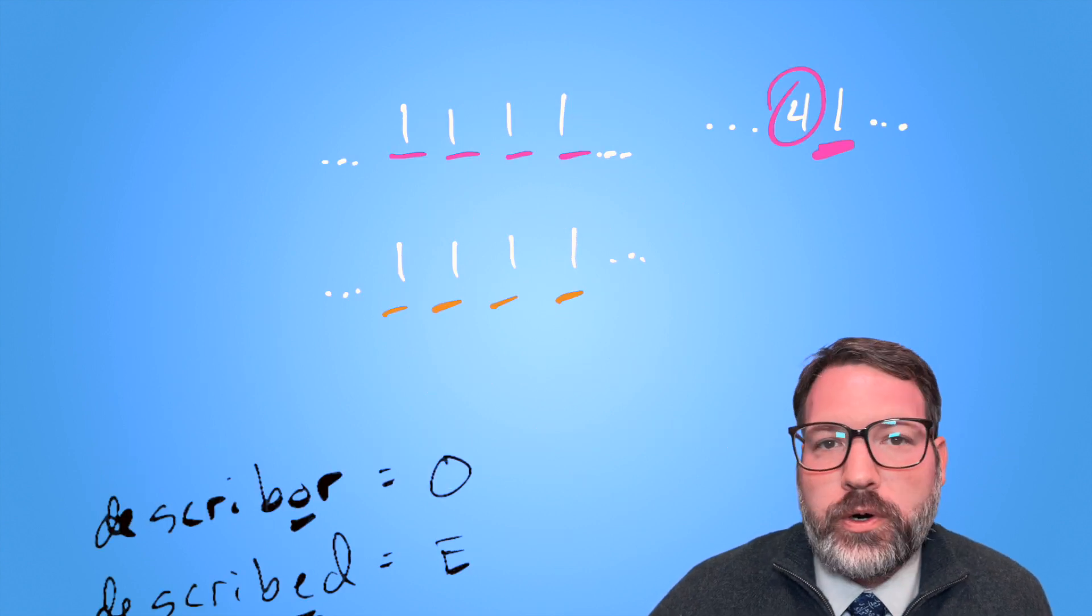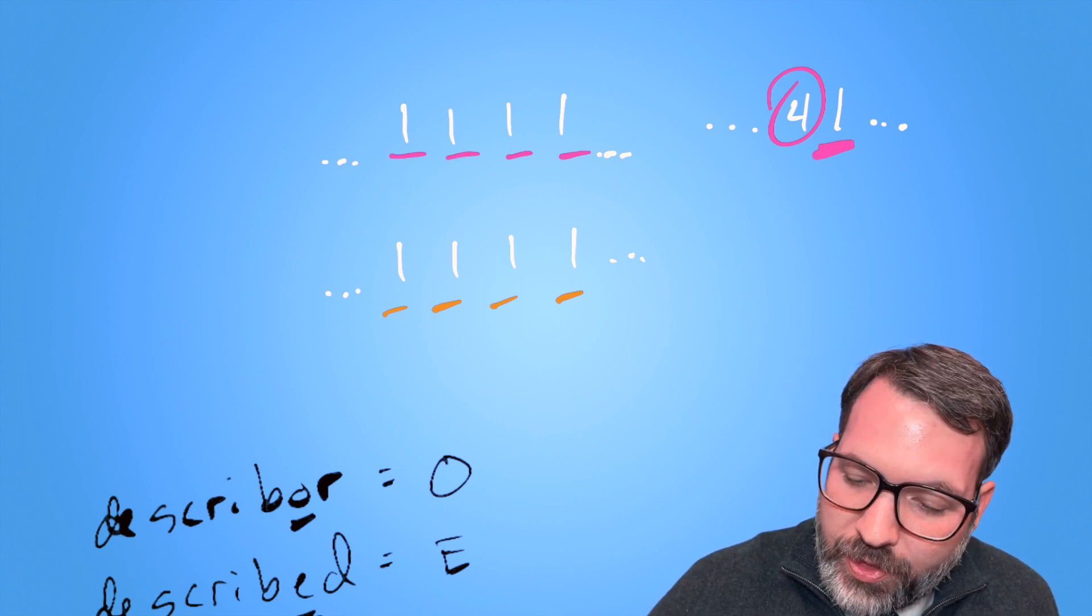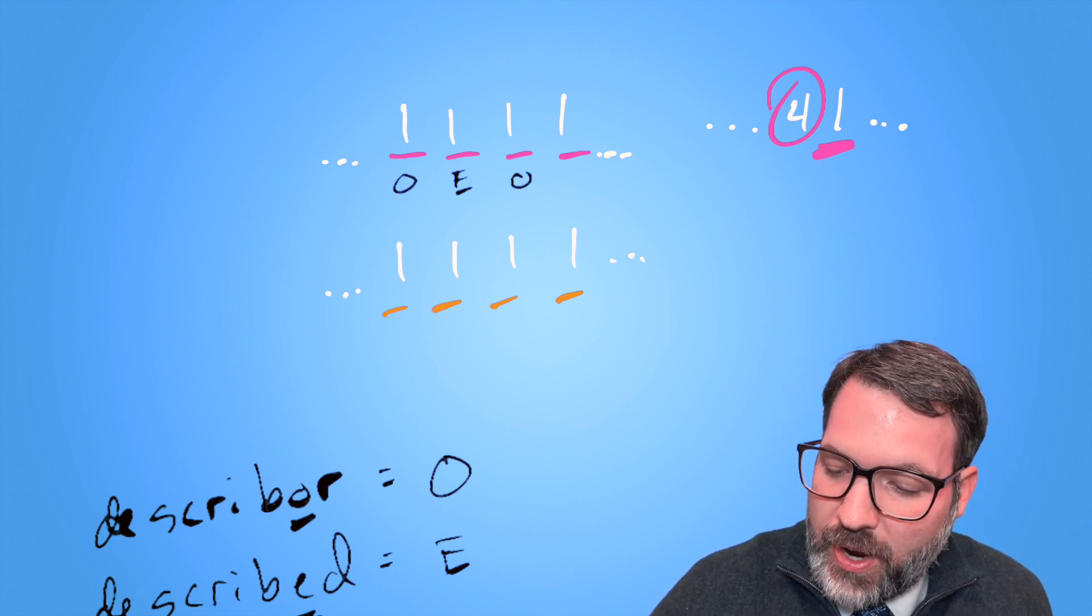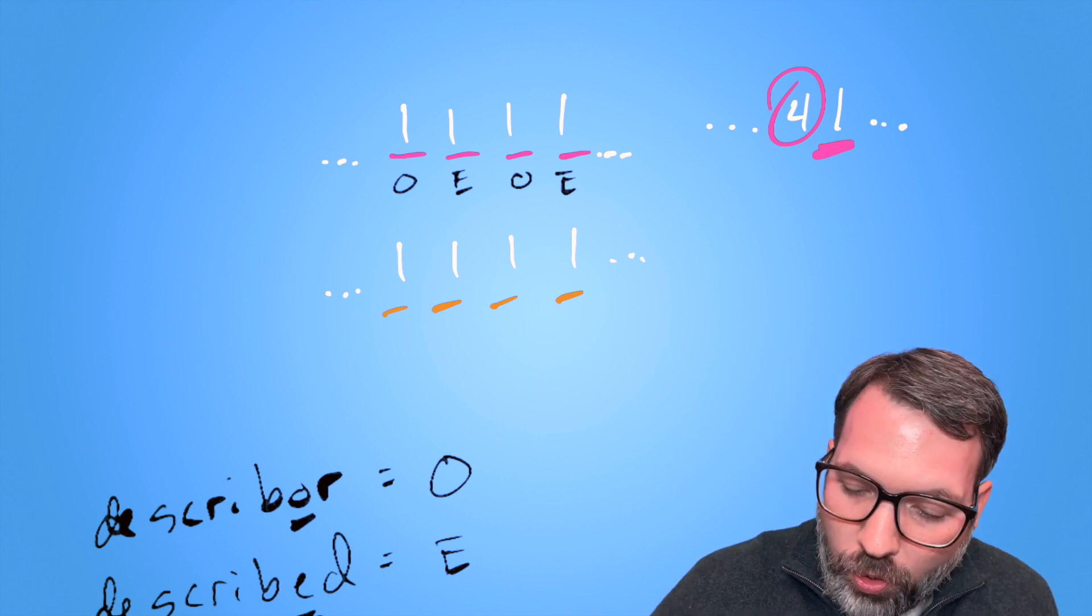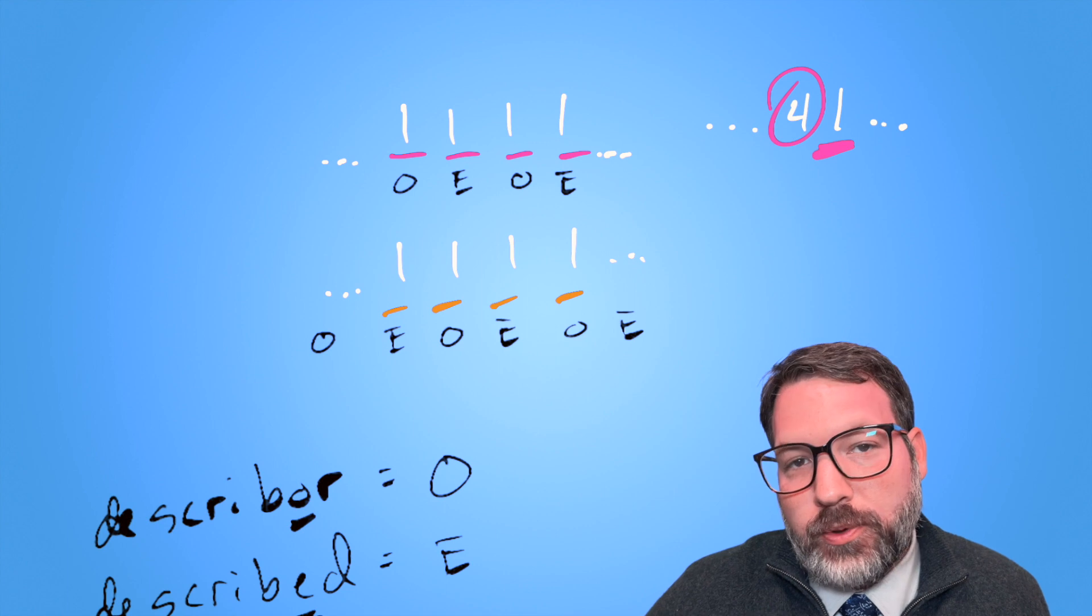That means the only way this four something, again, I'm doing four ones, could have ever come up was with a describer, described pair, describer, described pair, or something that actually started before we saw the term and would end up looking like this.